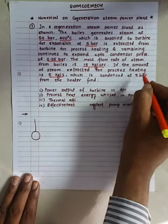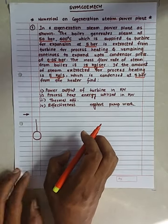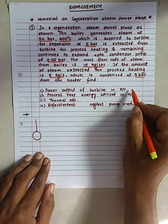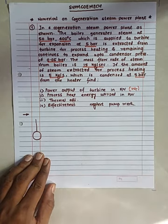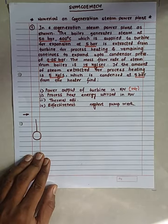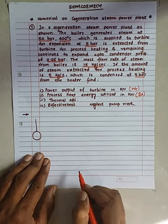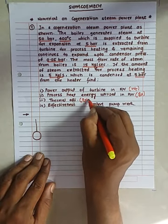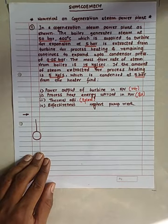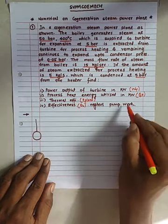The steam extracted is condensed at 5 bar from the heater. We have to find out: first, the power output of the turbine in kilowatt; second, the process heat energy utilized in kilowatt (Qp); third, the thermal efficiency of the cogeneration power plant; and finally, the effectiveness epsilon-u. We can neglect pump work in this case.